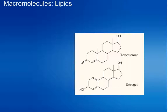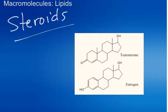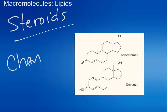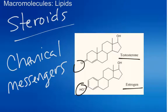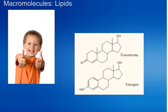Next we're going to talk about steroids. Steroids always have a four-ring structure — one, two, three, four rings — and they serve as chemical messengers. For example, testosterone and estrogen are steroids, and there's really not a whole lot of difference between the two, just a difference in some functional groups and where they're arranged. It's those steroids, those messengers, that tell your body whether you are supposed to phenotypically become a boy or become a girl.